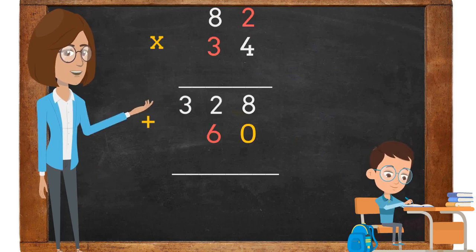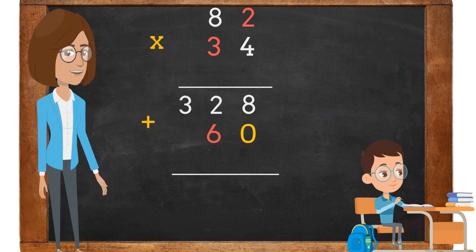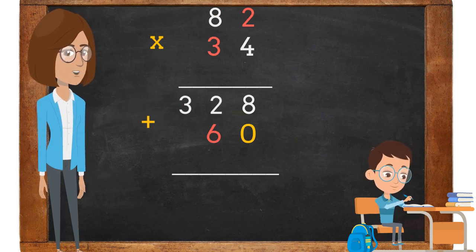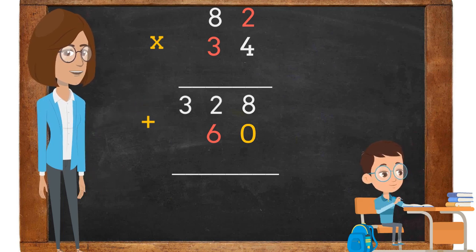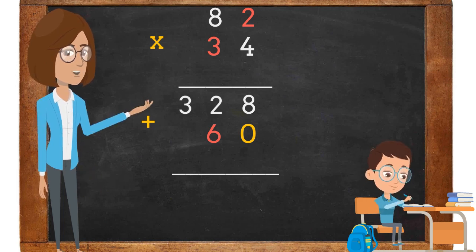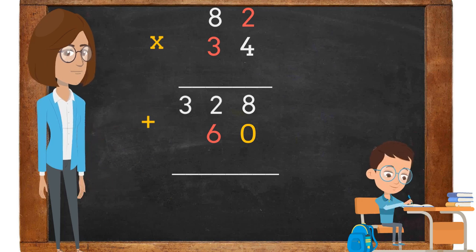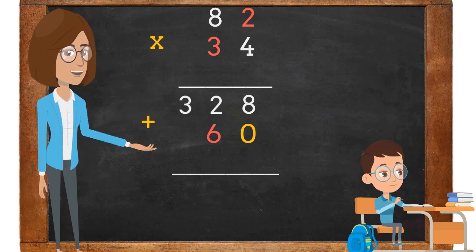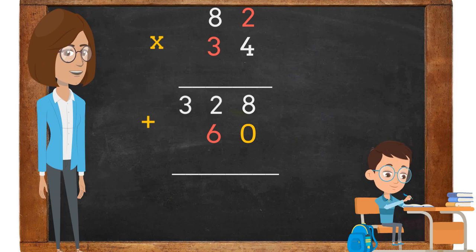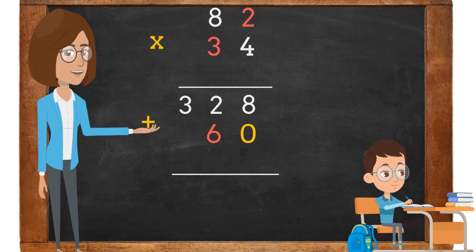The third step is to place a 0 under the 8 in the ones place, because we are going to start multiplying by the number in the tens place. Now let's multiply 3 times 2. 3 times 2 is 6.